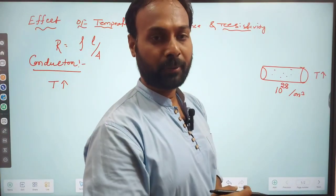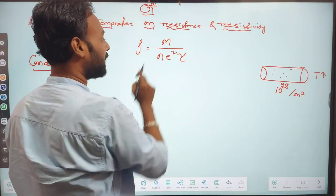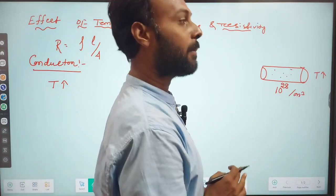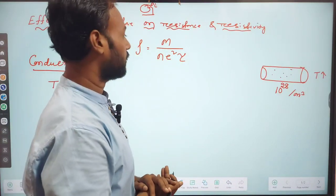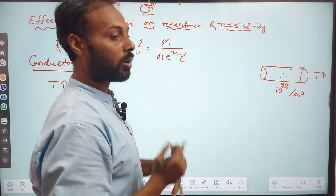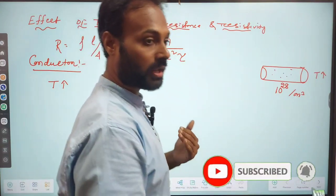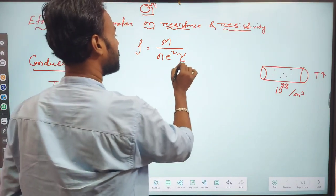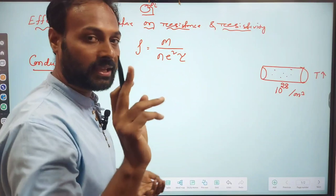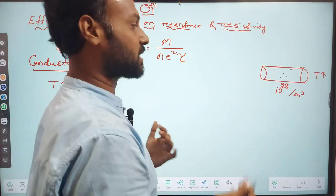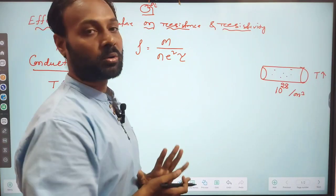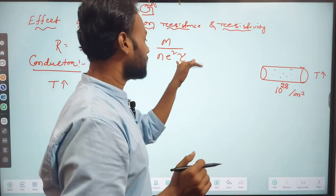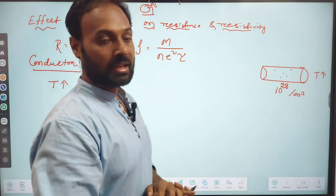In the conductor case, the electron density — number of electrons per unit volume — is very large, so it is considered an insignificant condition. That means the electron density does not change significantly when temperature is increased. So the main focus for the conductor case is on relaxation time.